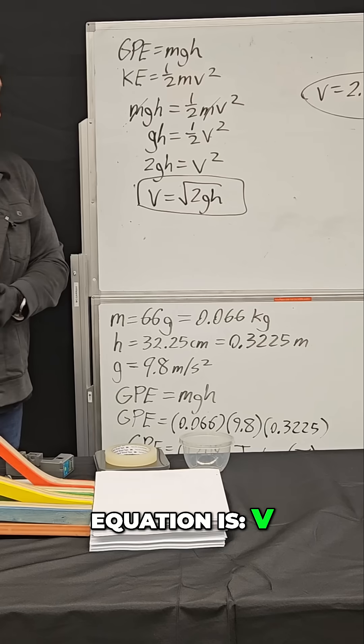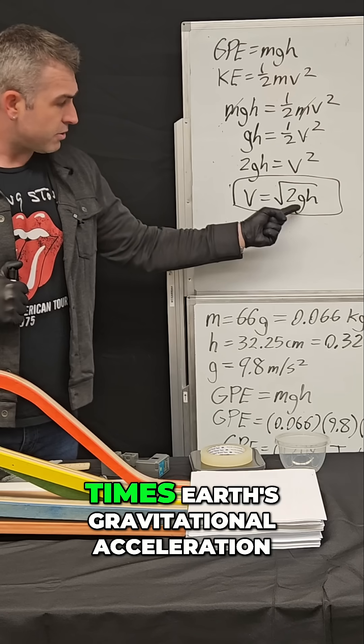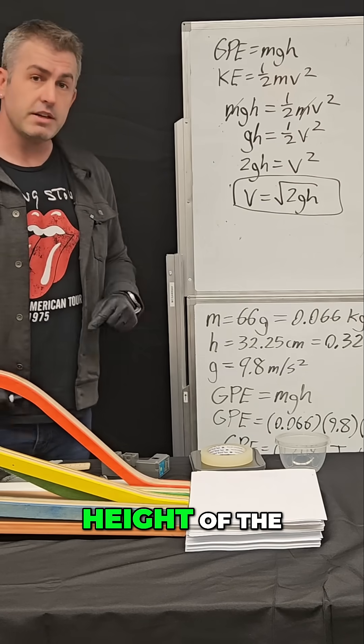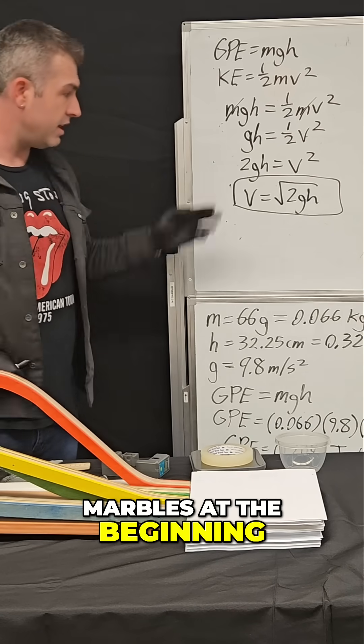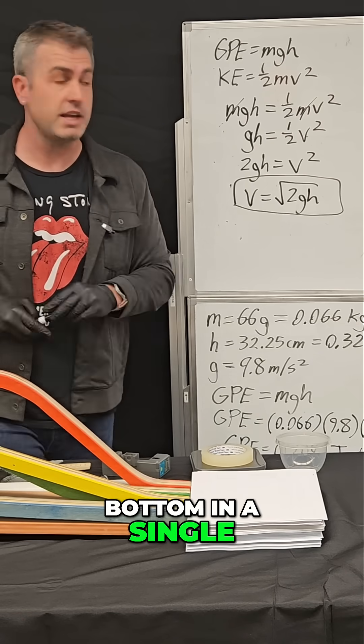And so my equation is V equals the square root of 2GH. That means if I take two times Earth's gravitational acceleration, which is 9.8 times the height of the marbles at the beginning, and I take the square root of that, I can actually calculate their velocity at the bottom in a single step.